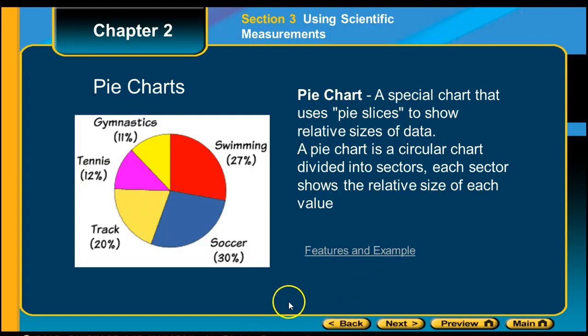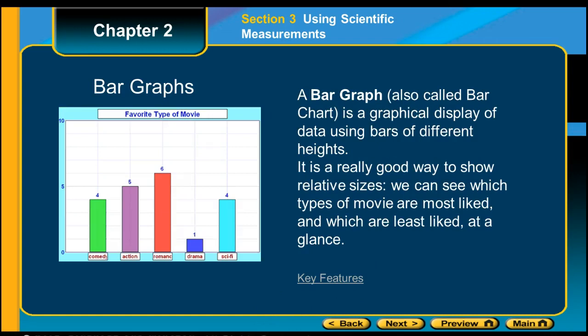The next graph would be a bar graph. A bar graph is also known as a bar chart, and it is a vertical display or horizontal, depending on which axis you label them on, showing different heights of the different substances that you're comparing. It's a really good way to show relative sizes. We can see which type of movie are most liked or which are least liked at a glance. These are probably easier to see than a pie graph.